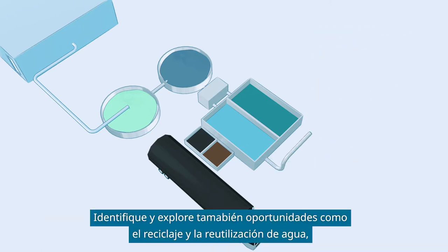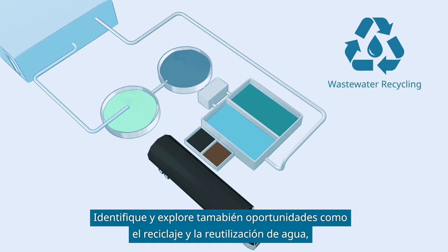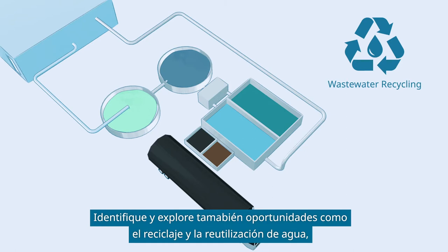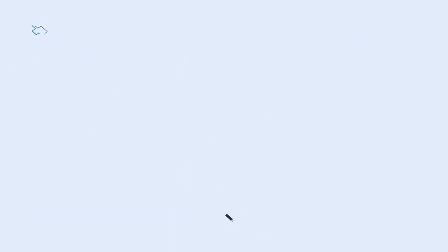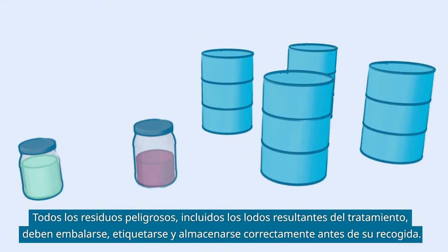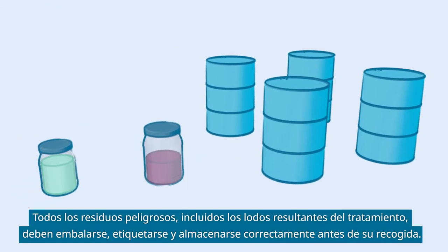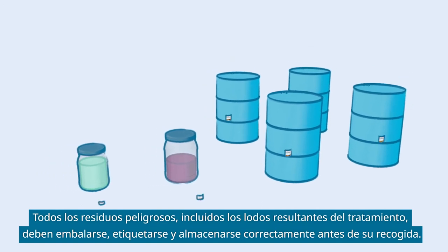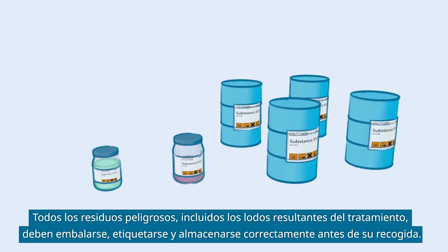Also, identify and explore opportunities such as recycling and reuse of water, product selection, product substitution, and process modification, in order to reduce pollutant and toxic chemical loading in discharges. All hazardous waste, including the treatment sludge, should be packed, labeled, and stored properly before collection.